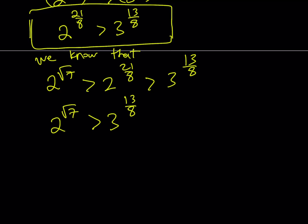So this basically gives us the answer. We were looking for the greater number, and the answer is going to be 2 to the power root 7, in this case, is greater. Great.